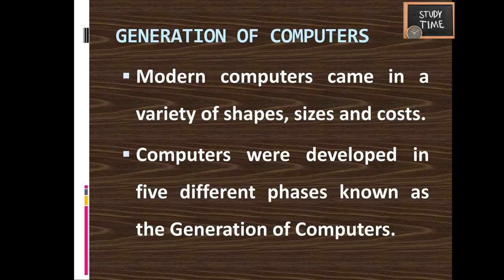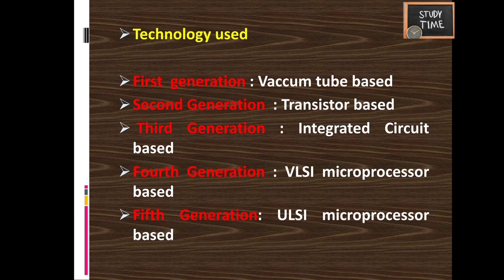Next we are going to see the generations of computers. There are five main generations. The technologies used are: first generation — vacuum tubes; second generation — transistors; third generation — integrated circuits; fourth generation — VLSI; and fifth generation — ULSI. We will see each one in detail.